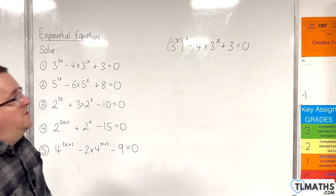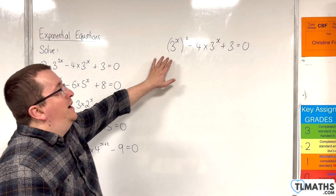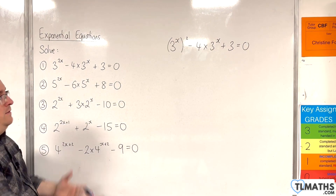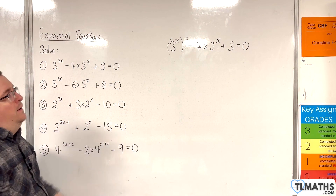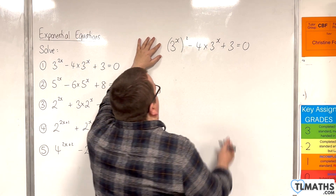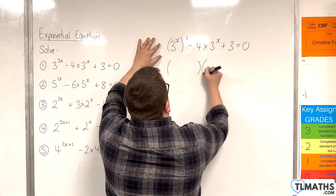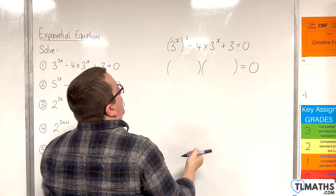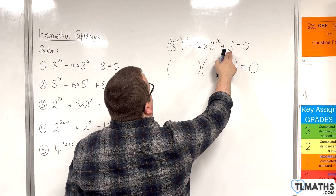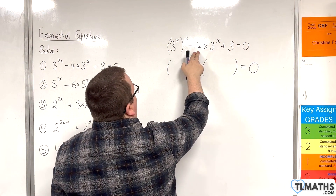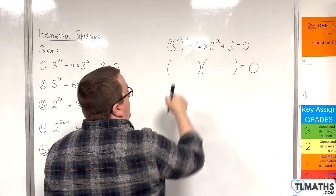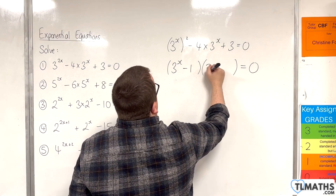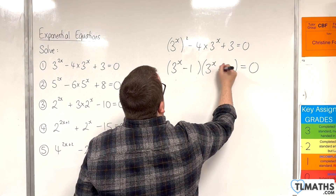If you're going to make a substitution, you would make y equals 3 to the x and then work it through that way, factorising etc. I'm going to go straight into factorising here. We want two numbers that multiply together to make 3, but add together to make minus 4. That would be minus 1 and minus 3. So the factors are: 3 to the x minus 1, and 3 to the x minus 3.